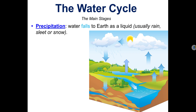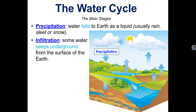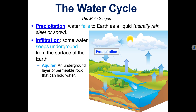The first step of the water cycle is precipitation. This is when water falls to Earth as a liquid, usually in the form of rain, sleet, or snow. Next comes infiltration — that's when some water seeps underground from the surface of the Earth and accumulates in an aquifer, which is an underground layer of rock that can hold water.